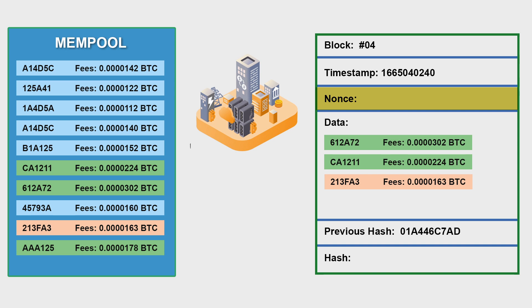Since transactions happen all the time, the miner won't run out of transactions. This is how miners pick transactions — both a single miner and a mining pool. I hope you understood it well, and on this note I'll see you in the next video.